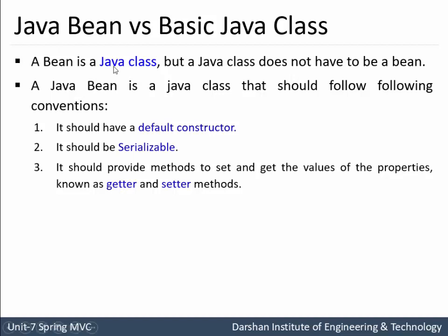A bean is a Java class but a Java class does not have to be a bean. A Java bean is a Java class that should follow certain conventions. The first convention is it should have a default constructor, meaning it should have at least one no-argument constructor. Second, it should be serializable, meaning it should be thread safe. Third, it should provide methods to set and get the values of its properties, which are also known as getter and setter methods. For example, a POJO class.